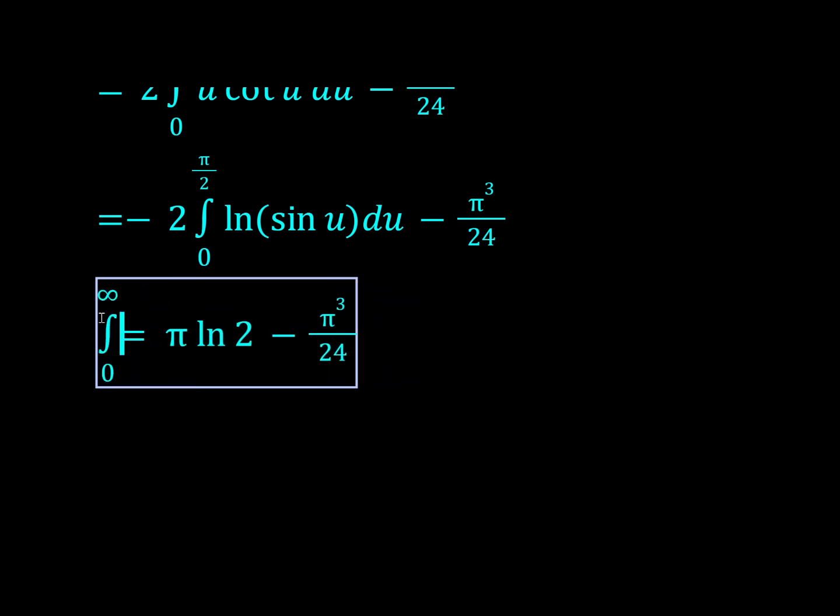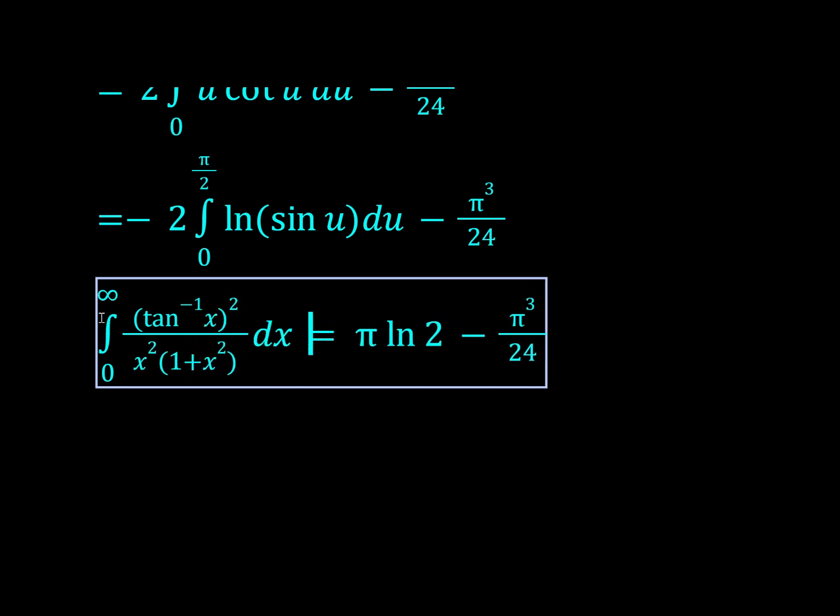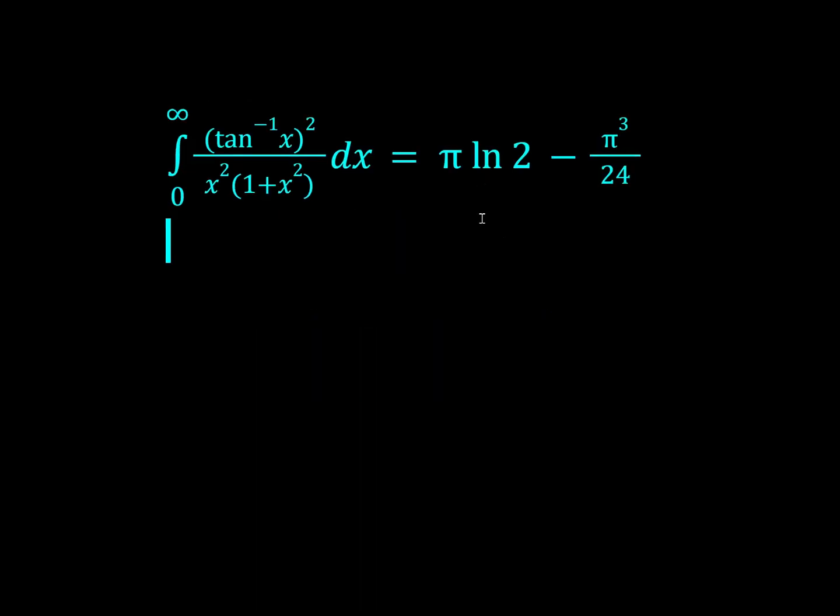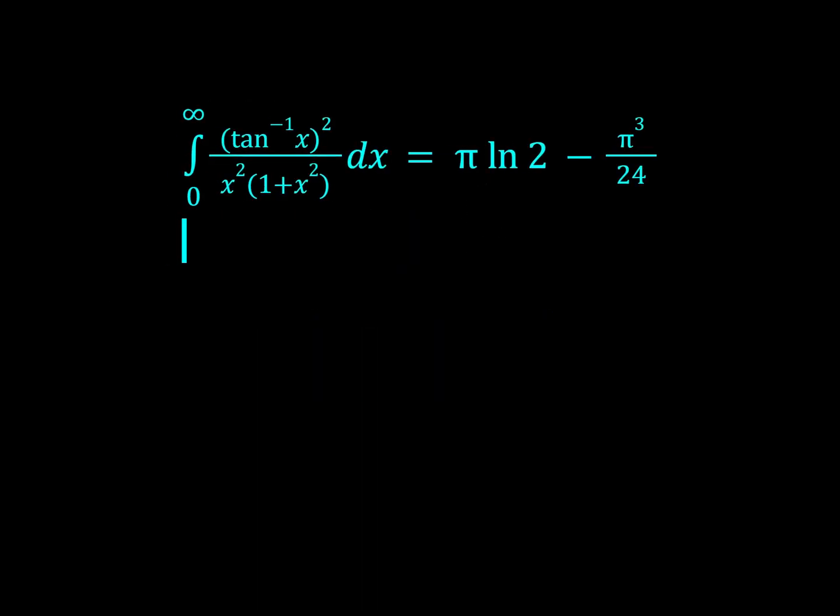The integral from 0 to infinity of inverse tan x squared over x squared times 1 plus x squared is pi log 2 minus pi cubed over 24. Okay, that's way too cool. Thank you guys for watching. I'll see you next time.